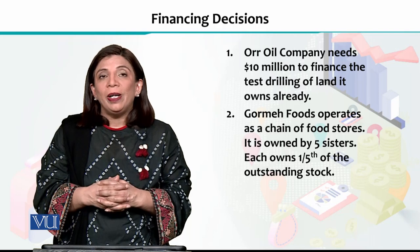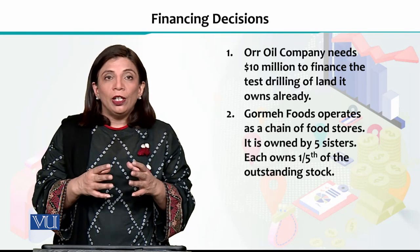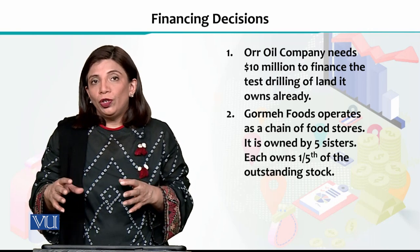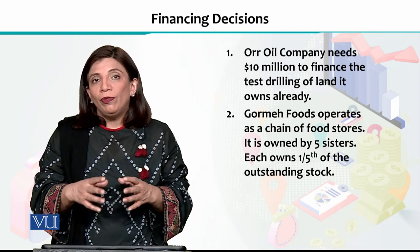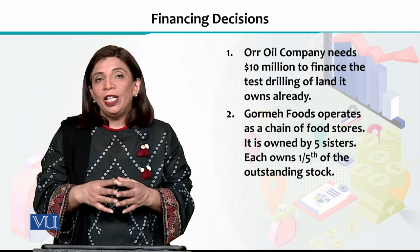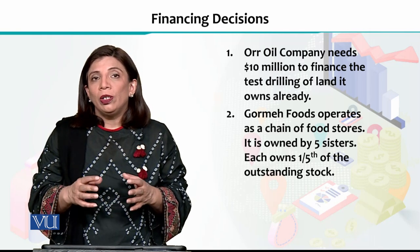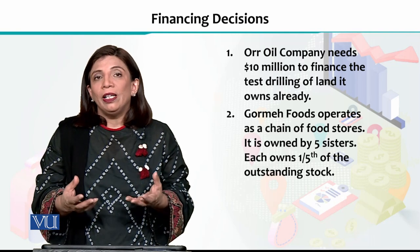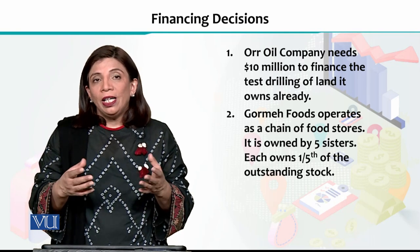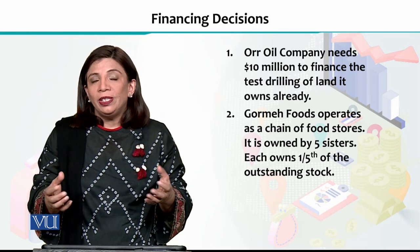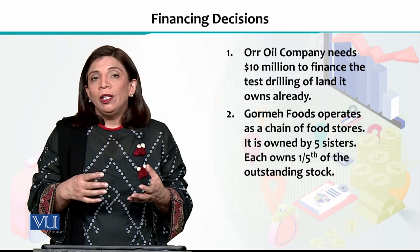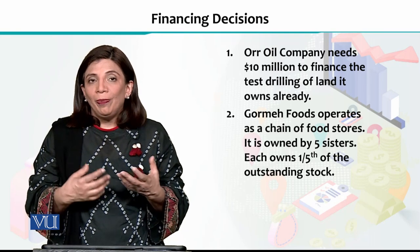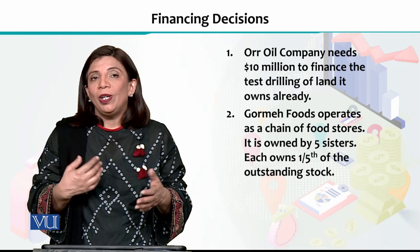Now we have another situation in which we have Gohmeh Foods, which is a chain of food stores in a country. This particular company, Gohmeh Foods, is owned by five sisters, and all five sisters each own one-fifth of the total common stock. Currently, they do not have assets available that they could use as collateral to take on further debt. They need money to manage their business, so what would be the best source of financing through which they can generate funds and manage their expenses and properly operate their business?